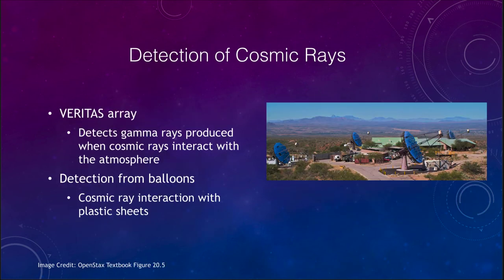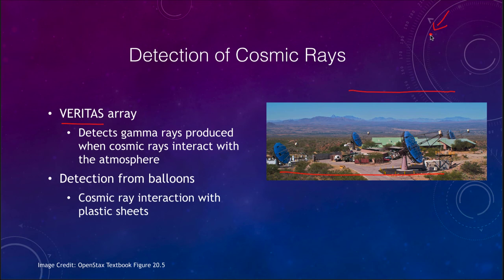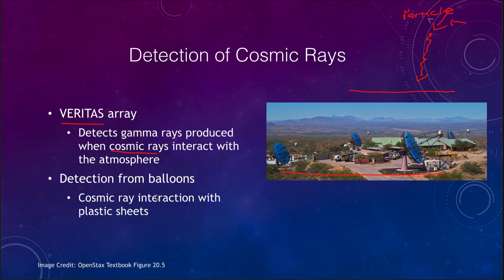One way to detect cosmic rays is the VERITAS array. As you can see in the image, it is on the surface of the earth, so cosmic rays themselves don't reach it. Instead, when cosmic rays strike particles in the earth's atmosphere, they produce gamma rays which can come down to the earth and be detected. So the particle itself does not make it to the surface, but the gamma radiation does, and VERITAS detects those flashes of gamma radiation.